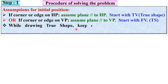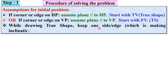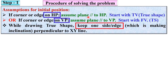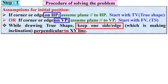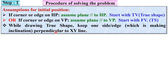While drawing the true shape, one important point: keep the one side or edge that is given to you — either on HP or on VP — perpendicular to the XY line. We will discuss this further with the help of a problem so that you can exactly understand step number 1.